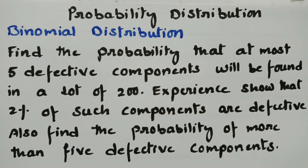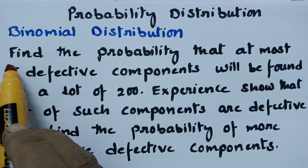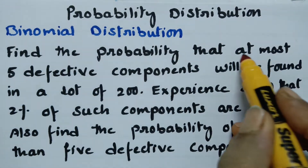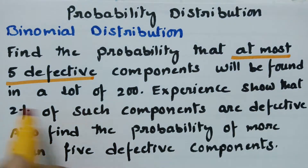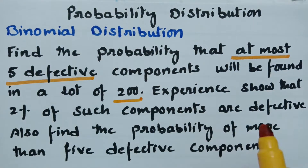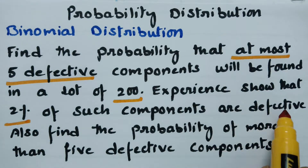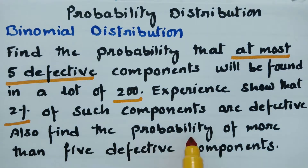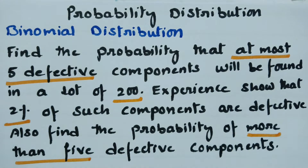Today's video is on binomial distribution, related to probability distribution. We have to find the probability that at most five defective components will be found in a lot of 200. Experiences show that 2% of such components are defective. We also need to find the probability of more than five defective components.